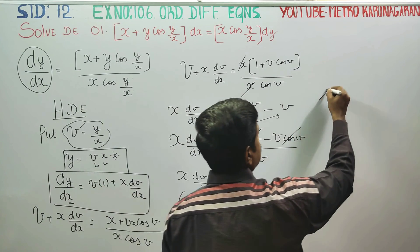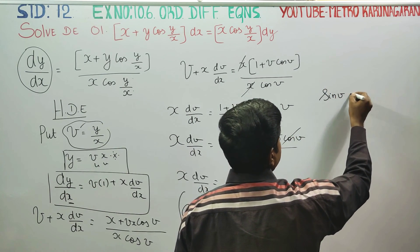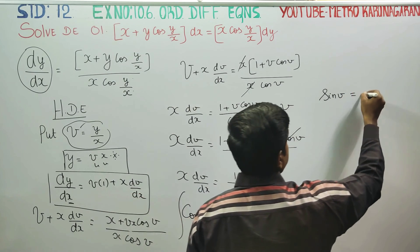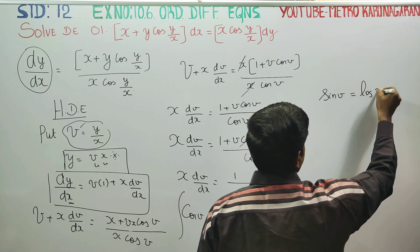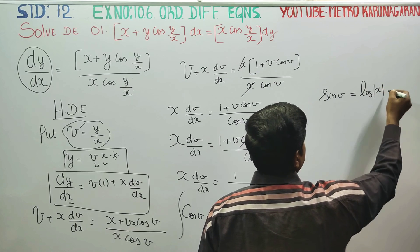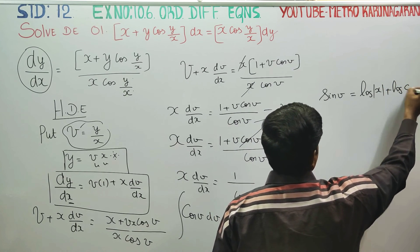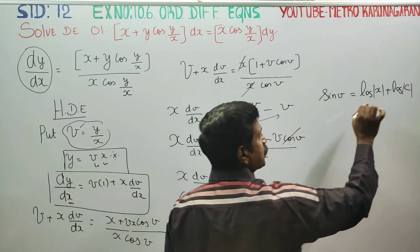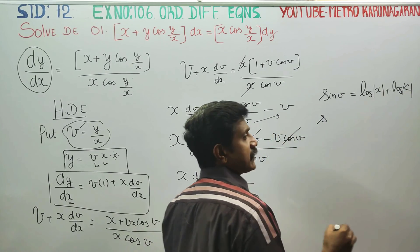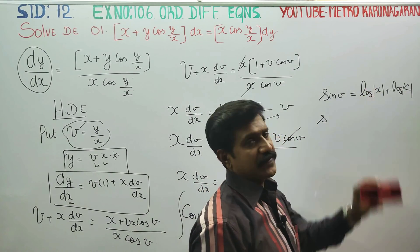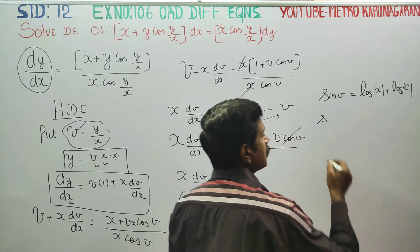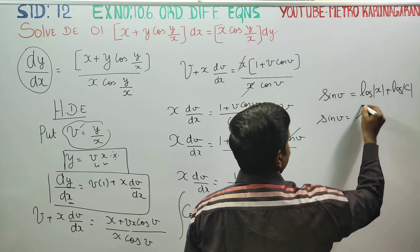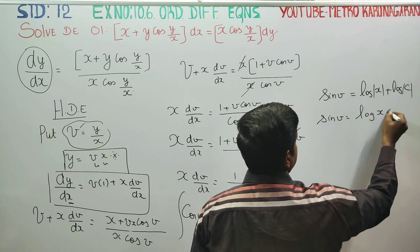Integrating: cos v integrates to sin v, and 1 by x integrates to log|x|. So sin v is equal to log|x| plus c, which we write as log(xc) for 12th standard.